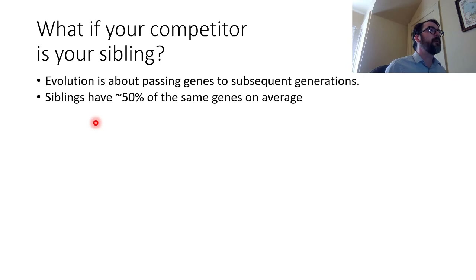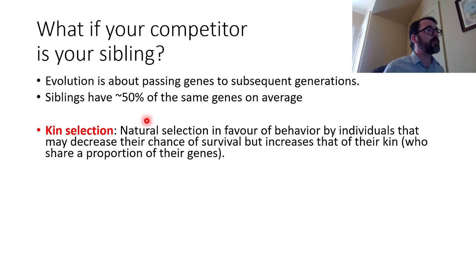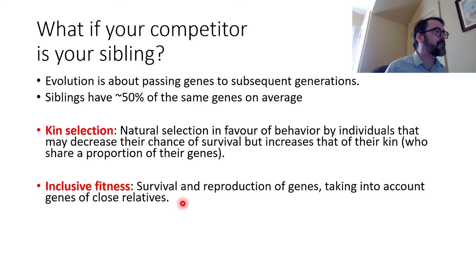But what if the competitor is your sibling? Evolution is about passing on genes to subsequent generations, and on average a pair of siblings will have about 50% of the same genes. Things you do to help your siblings might result in some of your genes being passed on even if you don't reproduce yourself. This led evolutionary biologists to the idea of kin selection: natural selection in favor of a behavior by individuals who may decrease their own chance of survival but increase the survival of their kin because of shared genes. This gives rise to inclusive fitness — the survival and reproduction of genes that takes into account that your genes might also be in your close relatives' bodies.